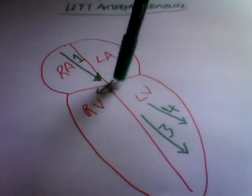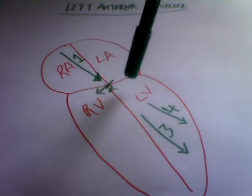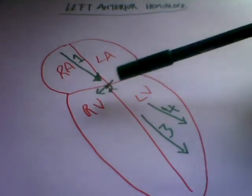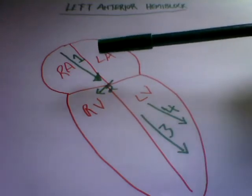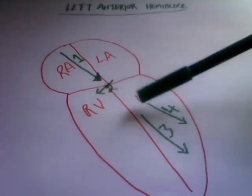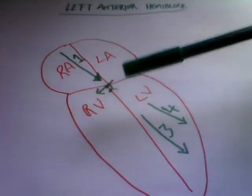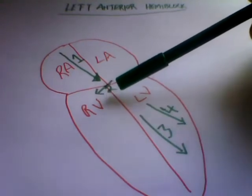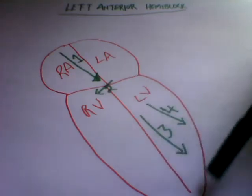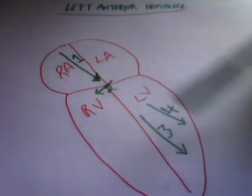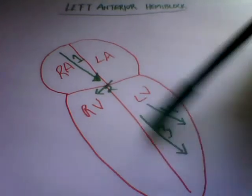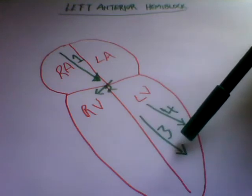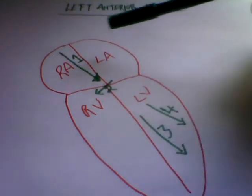Next is septal depolarization, which always occurs from left to right because the septum is primarily activated by the left posterior fascicle of the left bundle branch. This forms vector number two. As the impulse continues to the Purkinje fibers and to the ventricles, the overall direction of that impulse is towards the left ventricle, giving us vector three.